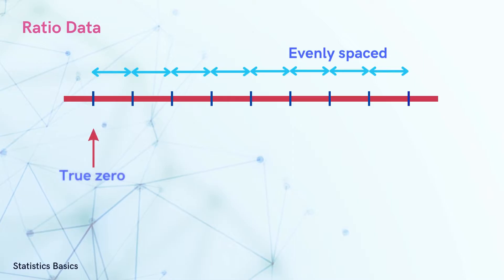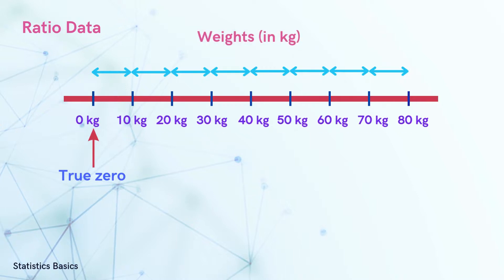In ratio data, there is a meaningful order, numbers are evenly spaced, and it has a true zero point. A common example of ratio data is weight. The difference between 10 kilograms and 20 kilograms is the same as the difference between 20 kilograms and 30 kilograms.